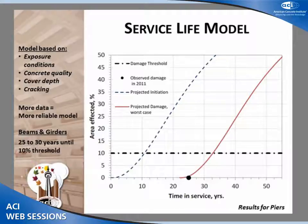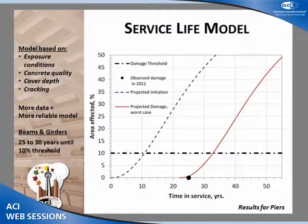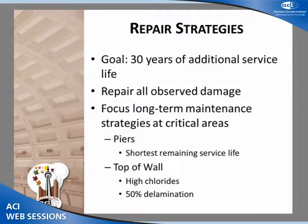The service life model uses Fick's second law of diffusion. You input your exposure conditions, concrete quality, cover depth, and visible cracking — the more chloride data you can gather, the better your model. We were anticipating that somewhere between 7 and 10 years, 10% of the piers would have visible surface damage, which was our threshold. The client is a water treatment facility — any spalling concrete getting into their water, pumps, or pipes means an expensive fix and plant shutdown. By comparison, the beams and girders had 25 to 30 years of additional service life projected.